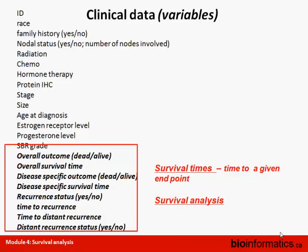This slide shows a typical example of clinical data available for tumor patients. Clinical data includes the ID of a patient, race, family history, nodal status (yes or no, or number of nodes involved), radiation or chemotherapy, hormone therapy, protein IHC, then staging, size of a tumor, age of diagnosis, hormonal levels, and so on.